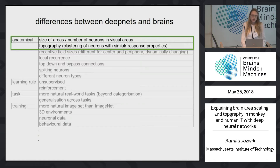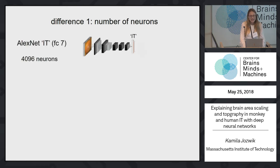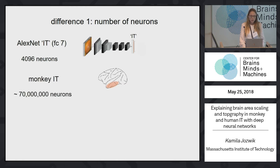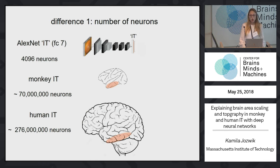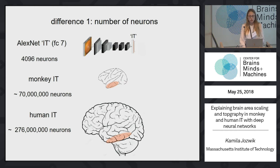Today I will talk about two anatomical constraints. The first one is the number of neurons. AlexNet IT, specifically layer 7, has 4,000 neurons. The monkey brain IT has 70 million neurons, and the human IT has almost 300 million neurons. Of course it would be slightly tricky to build a deep net with 300 million neurons in IT, but we can try to build in more neurons in deep nets to make the layers wider.